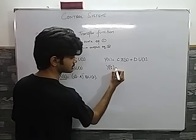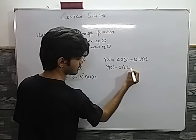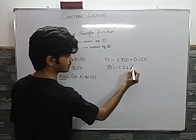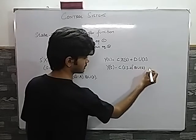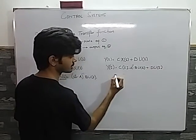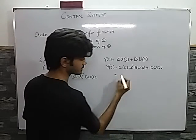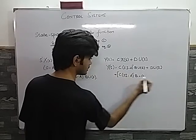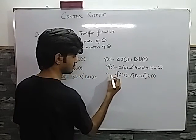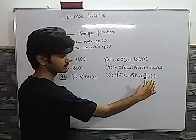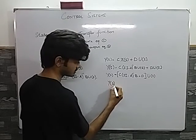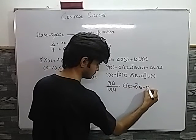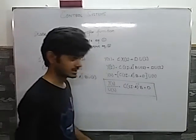Substituting the value of X(s), I get: Y(s) equals C·(sI minus A) inverse·B·U(s) plus D·U(s). Factoring out U(s), I get: Y(s) equals [C·(sI minus A) inverse·B plus D]·U(s). Taking Y(s)/U(s) to the left-hand side: Y(s)/U(s) equals C·(sI minus A) inverse·B plus D. This is my final equation which relates my transfer function with the state space.